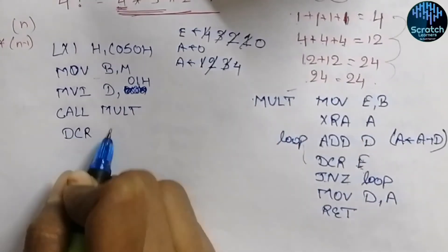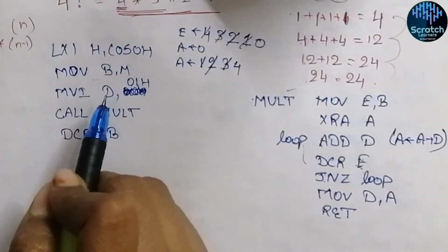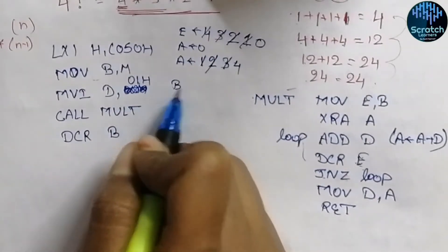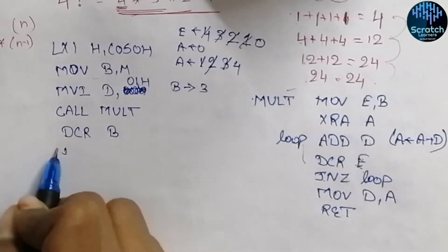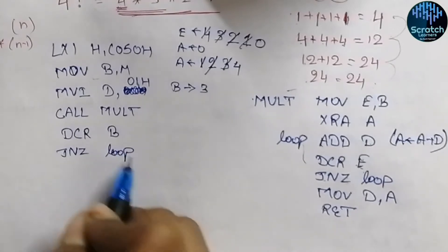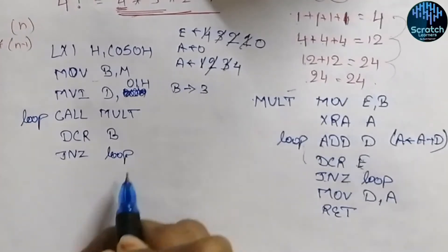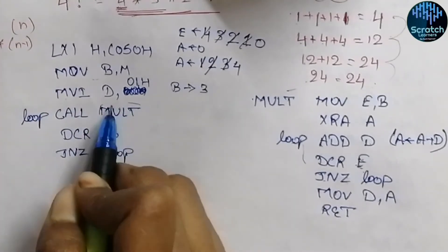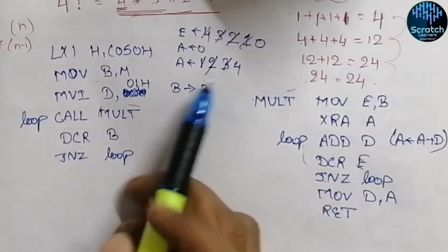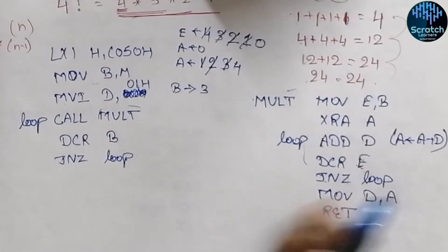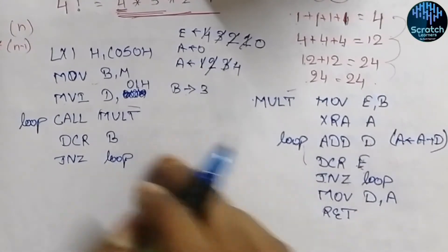Back in the main program, we decrement the content of B — B was four so now it becomes three. We check whether B equals zero; since it is not zero, we call the same subroutine again. The subroutine is now called with B equal to three, while the accumulator and register D both contain the value four.